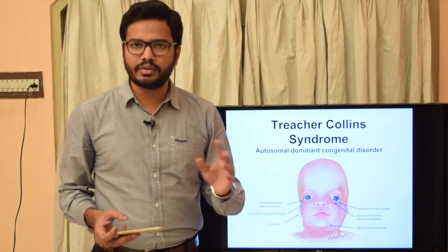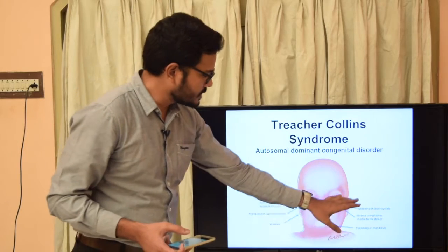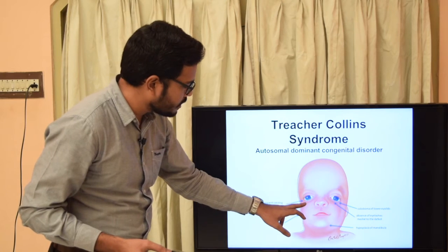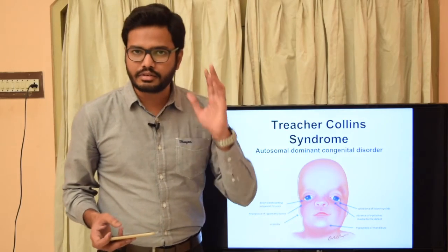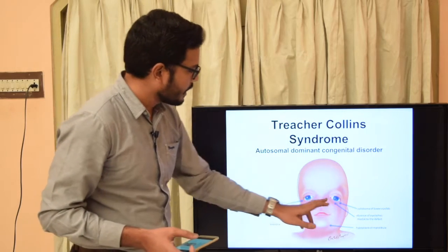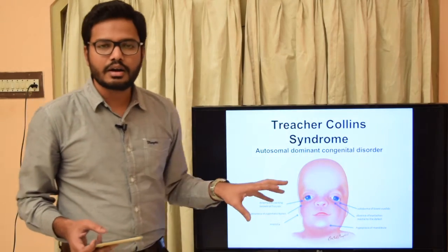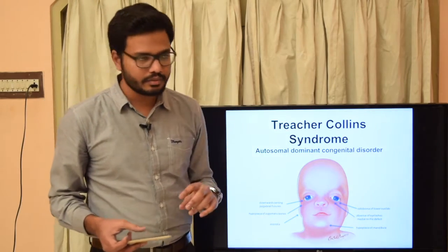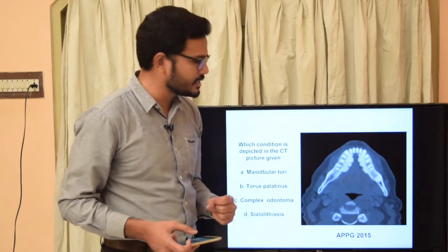Treacher Collins syndrome is also called mandibulofacial dysostosis. It is an autosomal dominant congenital disorder with characteristic features including: downward slanting of palpebral fissures, hypoplasia of zygomatic bones and mandible, microtia or underdeveloped external ear or pinna, and coloboma of lower eyelids with absence of eyelashes medial to the defect. These are the characteristic symptoms of Treacher Collins syndrome.